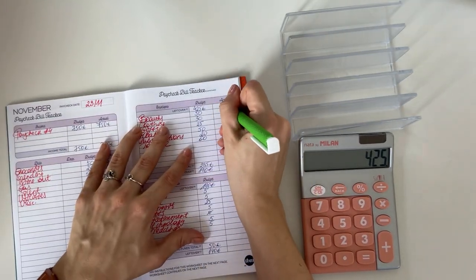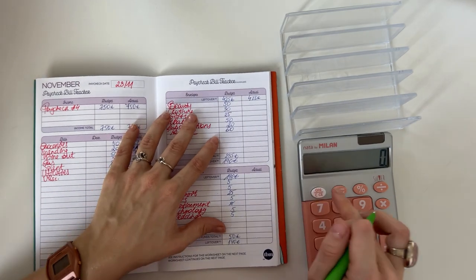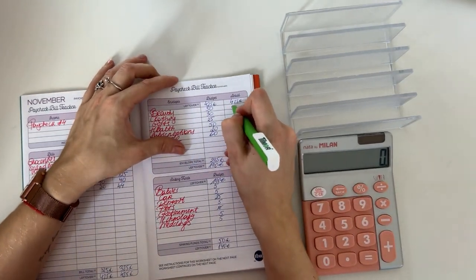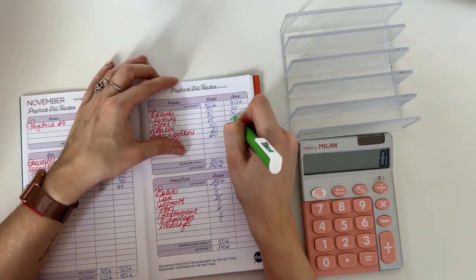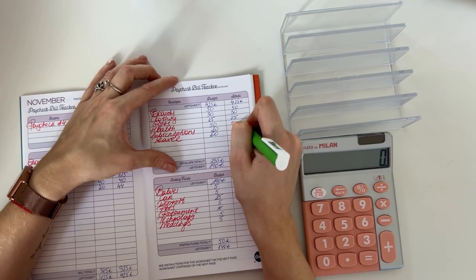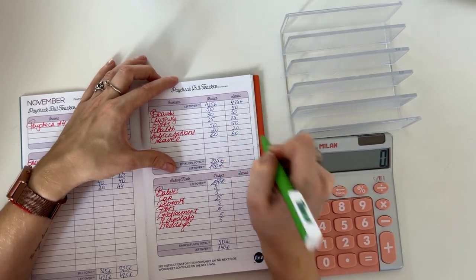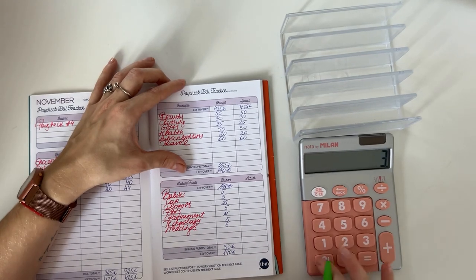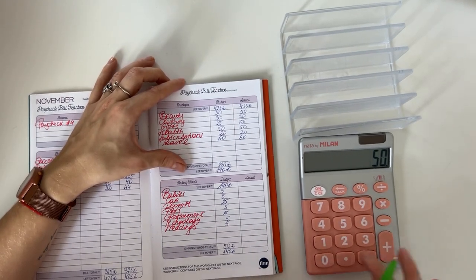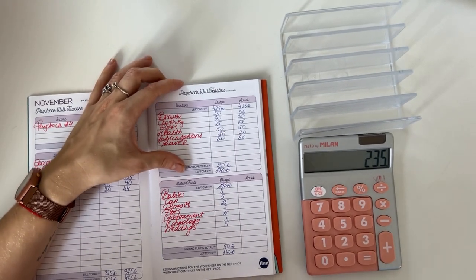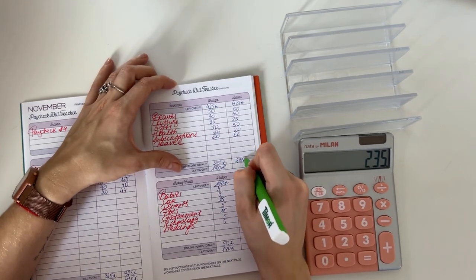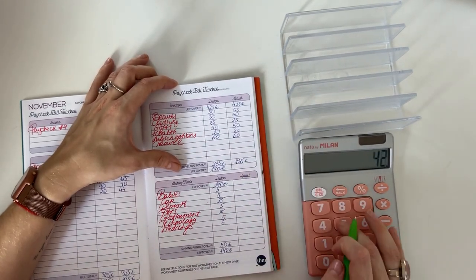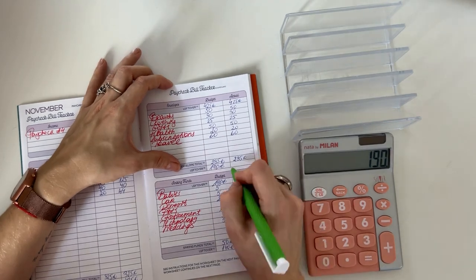We're bringing that here to short-term sinking funds. Beauty is getting 50, clothing 30, gifts 25, health got 50, subscriptions got 20, and travel got 60. So the actual amounts in total for short-term sinking funds was 235. 425 minus 235 is 190.